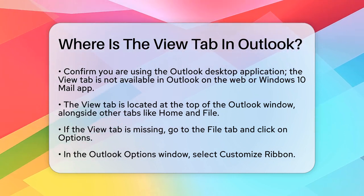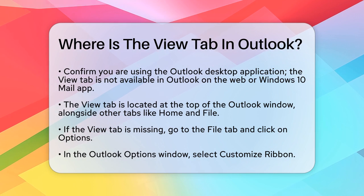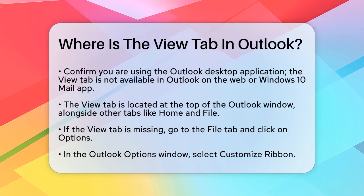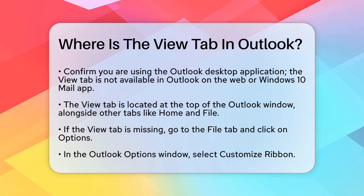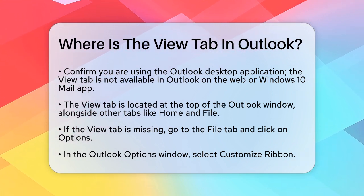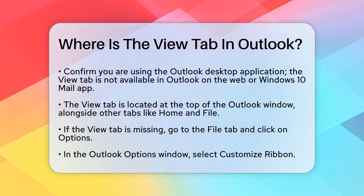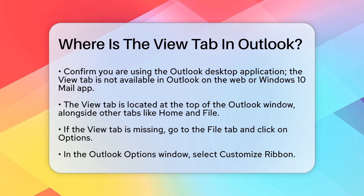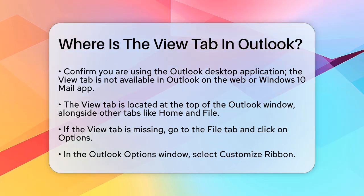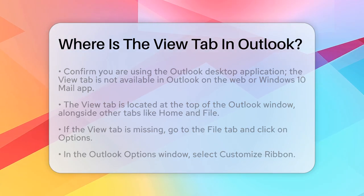Once you've confirmed you're using the desktop version, here's what you need to do. The View tab is typically located at the top of the Outlook window alongside other tabs like Home, Send, Receive, and File.